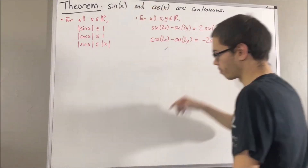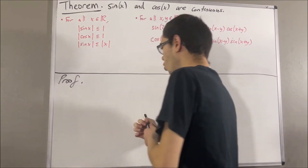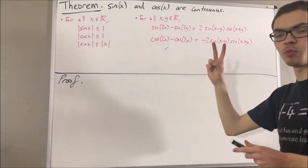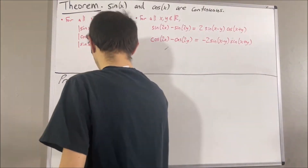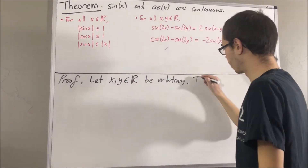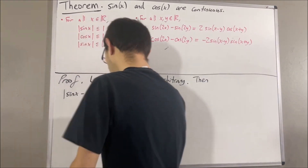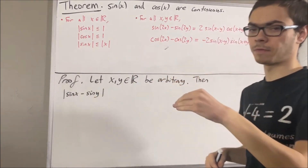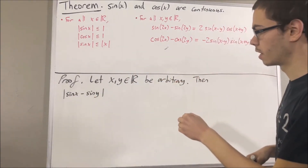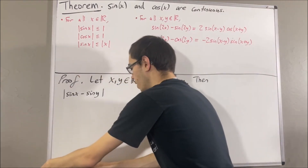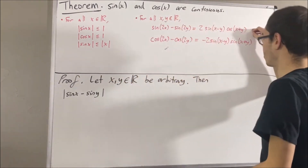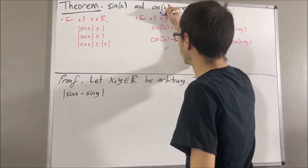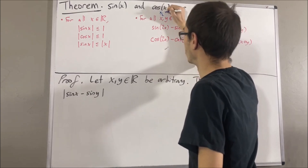So now let's get to proving this theorem. To start the proof, we are first going to prove a preliminary result. So let's consider two arbitrary real numbers x and y. From here, we're going to show that the absolute value of sine x minus sine y is less than or equal to the absolute value of x minus y. To see that, if we apply this preliminary result, we're going to take x to be x over 2 and y to be y over 2.